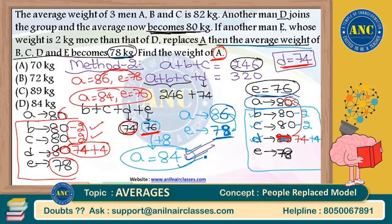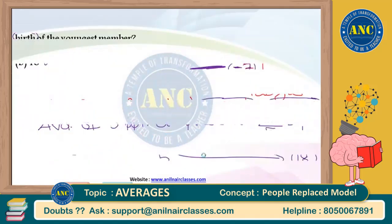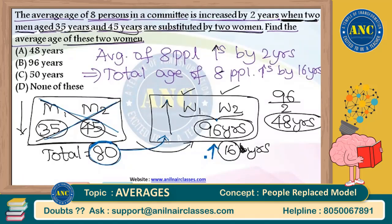It is not 86, Kiran. It is 84 only — 86 was when E was 78. Good question, Ashok. You cannot find the individual ages. If you want to find individual ages, some other extra information should definitely be given. In this question, you cannot find the individual ages. If the question asks for individual ages of two women, the answer will definitely be: cannot be determined uniquely.